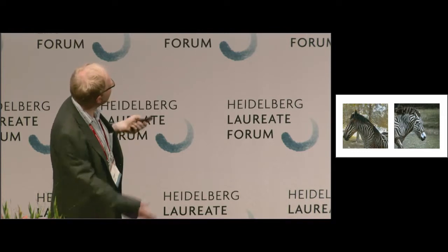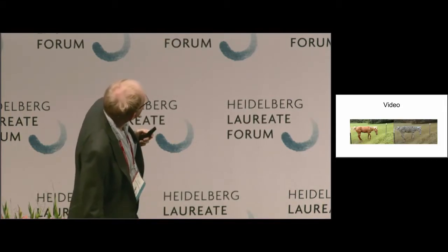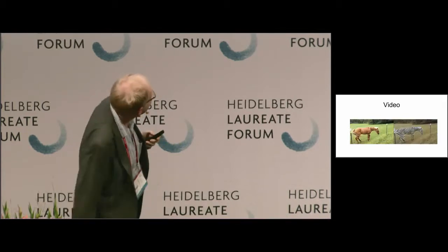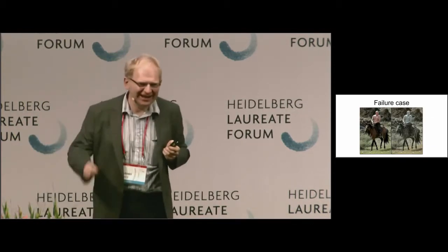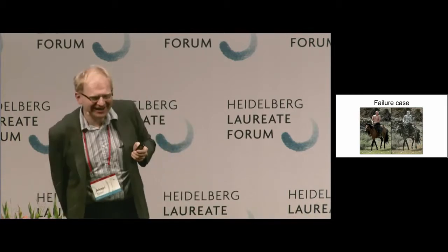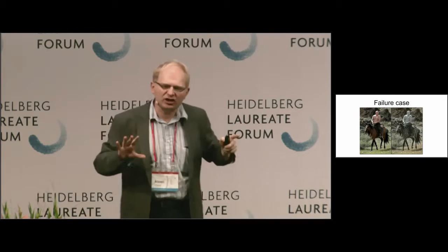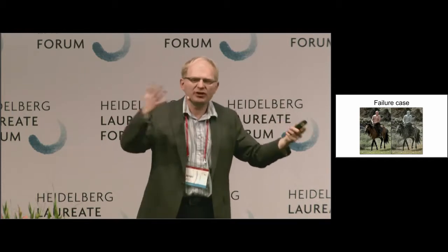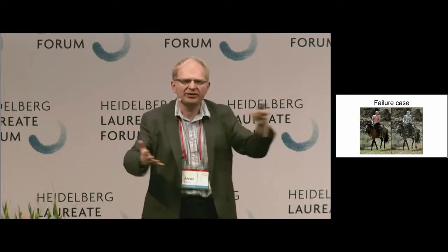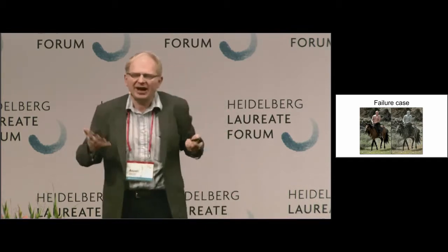Running horse-to-zebra one frame at a time without temporal consistency — it's doing okay, though the tail is weird. Even failures are interesting. In my talk in Moscow, Putin riding a horse got partially zebra-fied. It actually makes sense: there is no supervision, nobody told the network what a horse or zebra looks like. It's really doing bipartite matching — two visual languages without a dictionary. So maybe it's not that weird that it thought Putin was part of the horse.